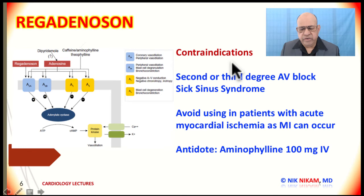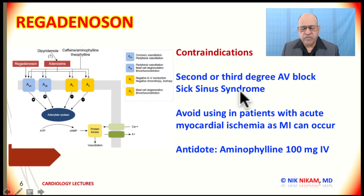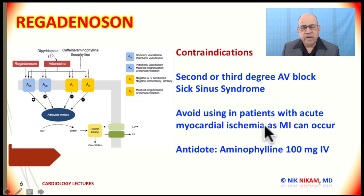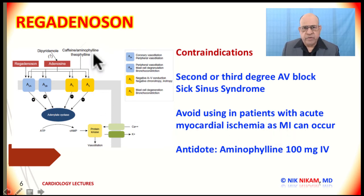We need to be aware of contraindications for regadenosine in nuclear stress testing. Patients with 2nd degree or 3rd degree AV block or sick sinus syndrome should not receive regadenosine. It should also not be used in patients with acute myocardial ischemia or acute coronary syndromes, because increased blood supply to normal vessels could cause coronary steal, aggravating myocardial ischemia or resulting in myocardial infarction.